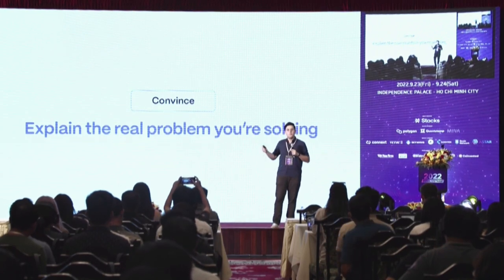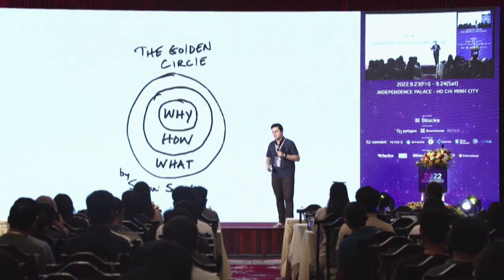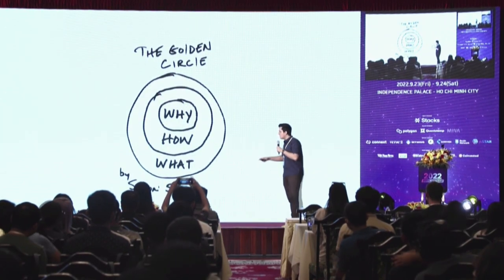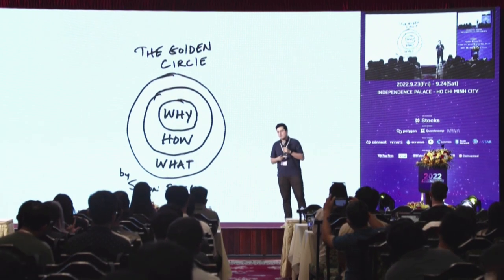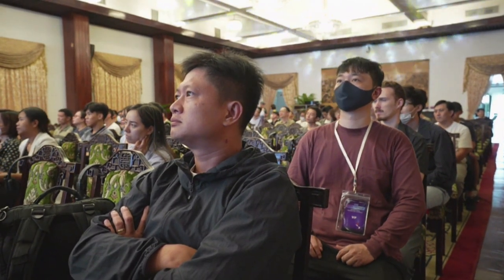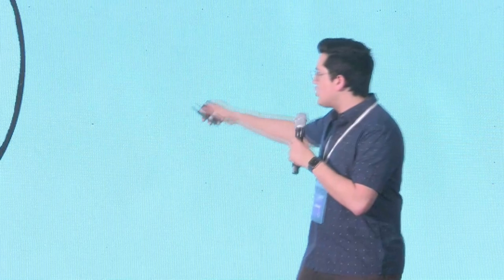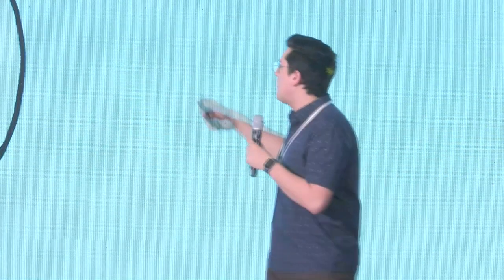Let's start with 'convince.' The first step is to explain the real problem that you're solving — this is not done nearly enough. There's a speaker named Simon Sinek who has a great TED talk called 'How Great Leaders Inspire Action,' where he introduces a concept called the golden circle: the why, the how, and the what. The way most computer companies sell a computer is they start with the what — we have a fast computer, well-designed, more memory, lower price — then move to the how, then the why.